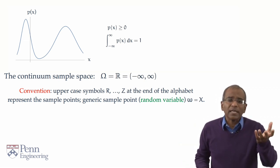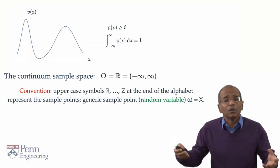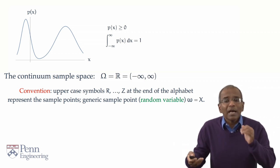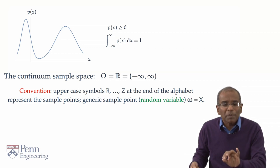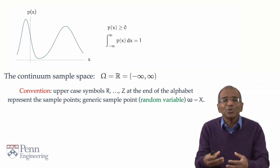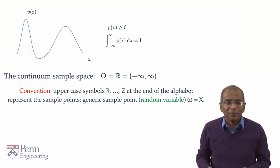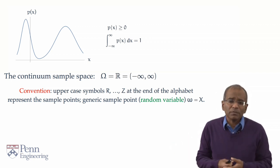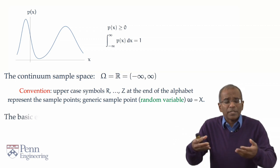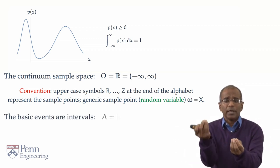All right, so uppercase X is a generic random variable for a chance experiment described by the probability law, which is induced from that density above you. What are the events of interest? Well, the basic events are naturally intervals. So an event A is in the form of an interval from a to b.